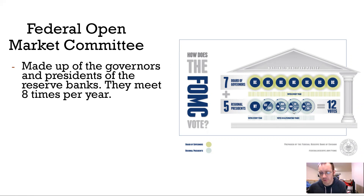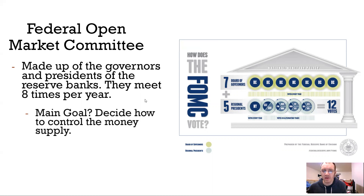For example, there's a reserve bank in Minneapolis — Minneapolis, San Francisco, and Kansas City rotate, and each year they get one vote. So you have five of the presidents of the banks, you have the Board of Governors, and they meet eight times a year.